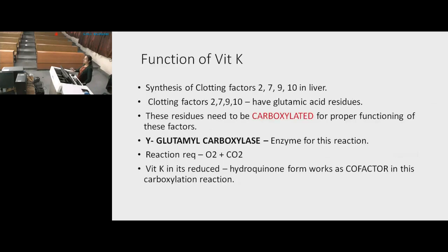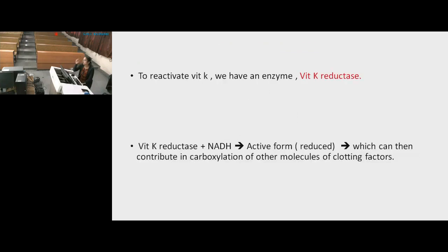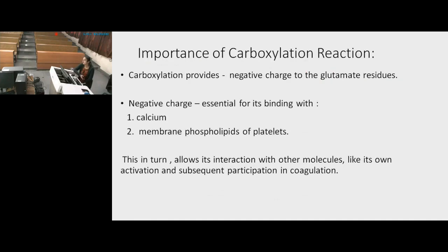Vitamin K is absorbed in the small intestine; it requires bile salts from the liver as it is fat-soluble. It is absorbed via chylomicrons along with fat into the lymphatic channels, stored in the liver, but not to a large extent — liver stores decline rapidly if not replenished. For the epoxide cycle: active vitamin K gets oxidized; to reactivate it, the enzyme vitamin K epoxide reductase uses NADH to convert it back to active form, which then contributes to further carboxylation. This carboxylation provides negative charge to the glutamic acid residues, enabling binding with calcium and membrane phospholipids, allowing interaction and activation of clotting factors.